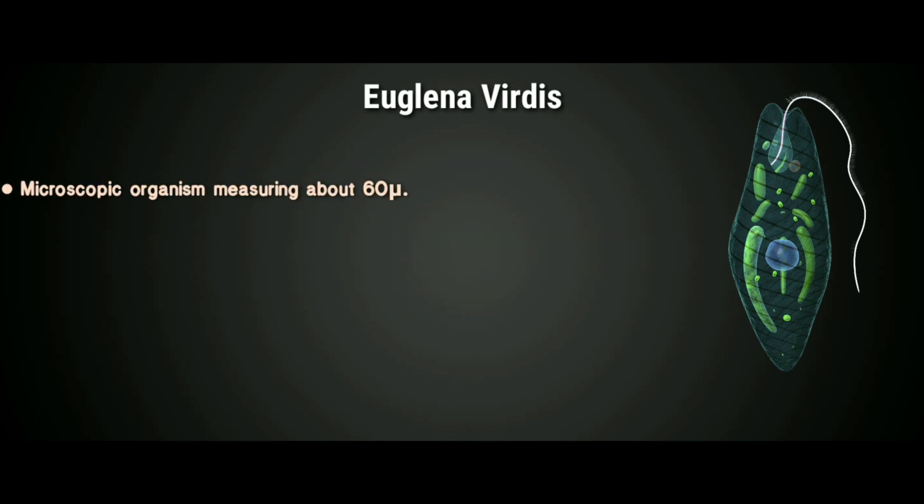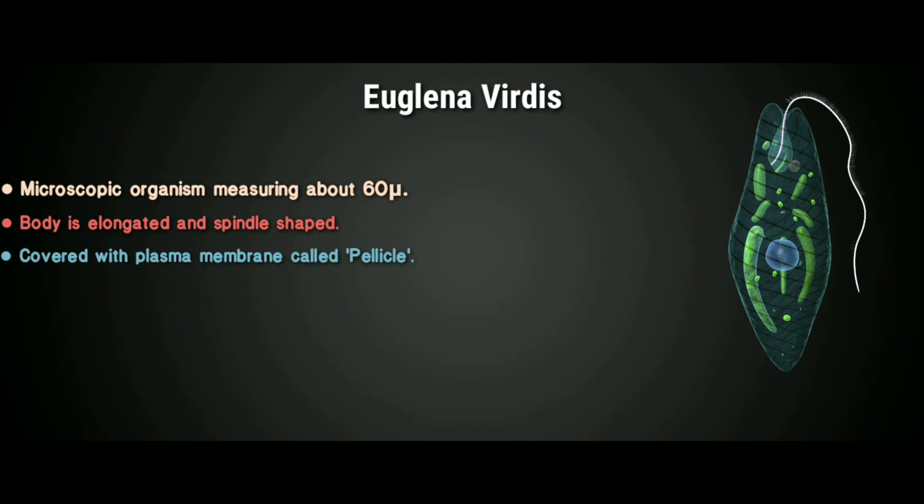Euglena viridis is a microscopic organism measuring about 60 microns. The body is elongated and spindle-shaped. The body is covered with a plasma membrane called the pellicle.